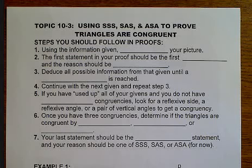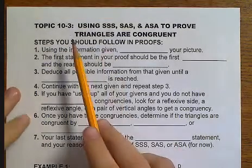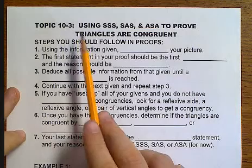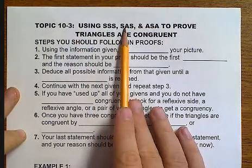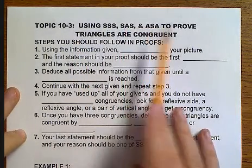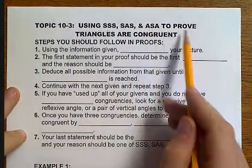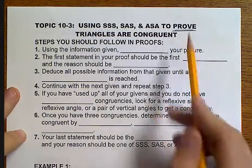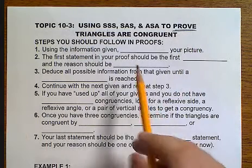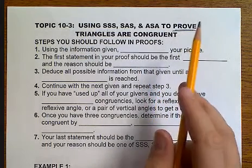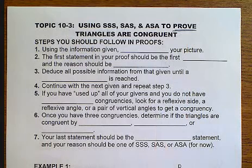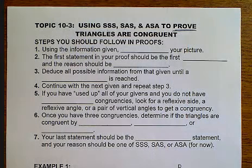Today we're going to be talking about Topic 10-3: using Side-Side-Side, Side-Angle-Side, and Angle-Side-Angle to prove that triangles are congruent. We're going to be taking what we learned in the last topic and writing these as formal proofs.